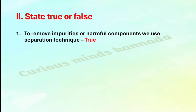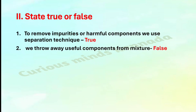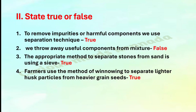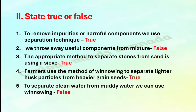State true or false. First: To remove impurities or harmful components, we use separation technique — True. Second: We throw away useful components from a mixture — False. Third: The appropriate method to separate stones from sand is using a sieve — True. Fourth: Farmers use the method of winnowing to separate lighter husk particles from the heavier grain seeds — True. Fifth: To separate clean water from muddy water, we use winnowing — False.